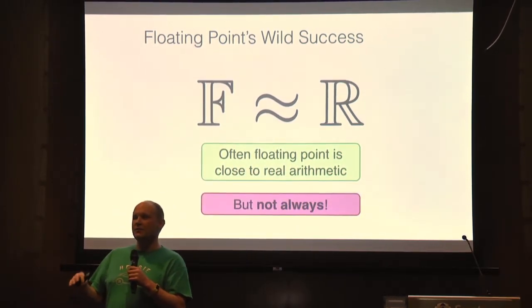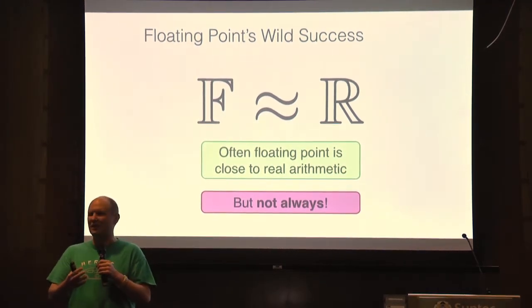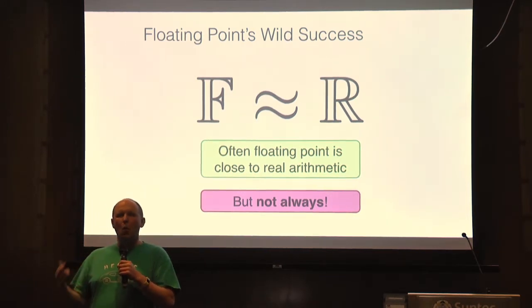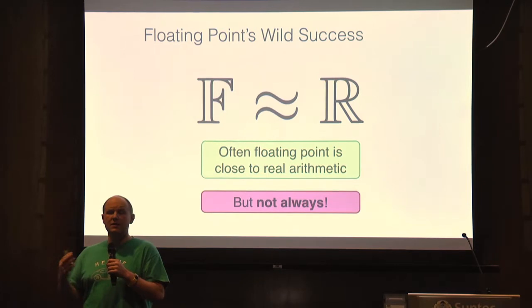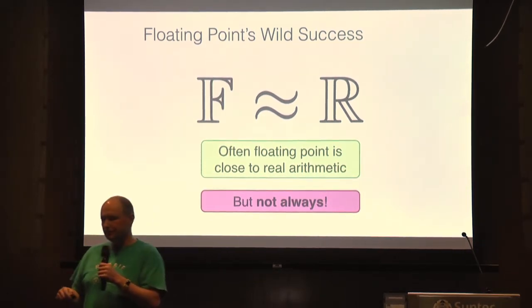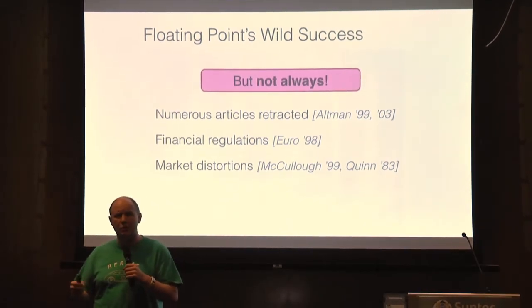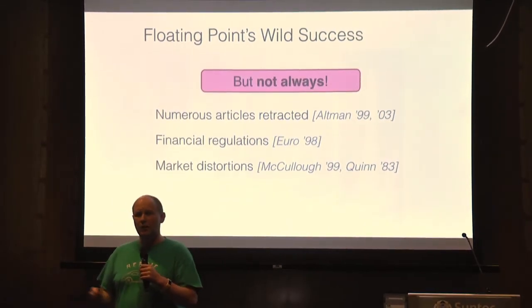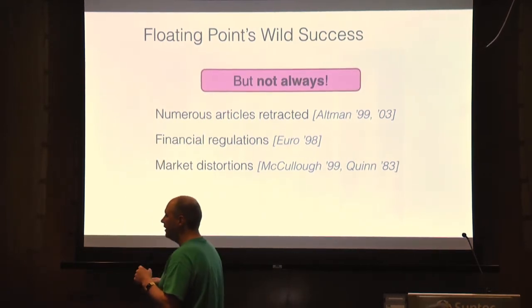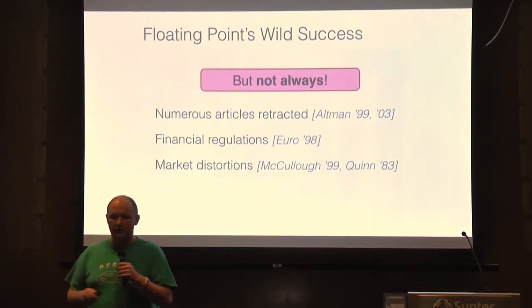The problem is when that doesn't happen. In this room we have astrophysicists and climate scientists who are fluent in numerical methods, but we don't really want all of our scientists to have to learn the nitty-gritty of numerics. There have been examples where things go wrong: financial regulations in Europe, retracted scientific articles, and distortion of election results, for example.